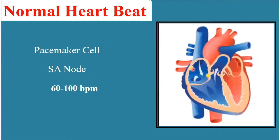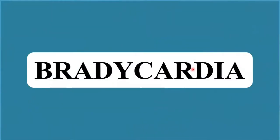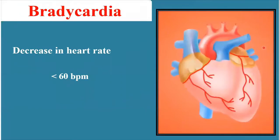Arrhythmias are of different types, but the two most important discussed here are bradycardia and tachycardia. Bradycardia is the irregular heartbeat in which there is a decrease in the heart rate — specifically, the heart rate falls below the normal range of 60 to 100 beats per minute, going below 60 beats per minute. This slow heart rate is known as bradycardia.